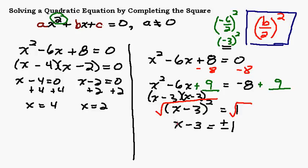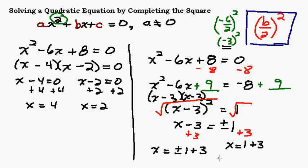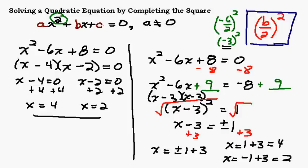Last thing we have to do is get x by itself — get rid of this minus 3 by adding 3 to both sides. So we end up with x equals positive or negative 1 plus 3. The positive and negative give you your two different solutions. So x is positive 1 plus 3, and x could also be negative 1 plus 3. 1 plus 3 is 4, negative 1 plus 3 is 2 — 4 and 2, just like the two answers we got over there. Same thing.